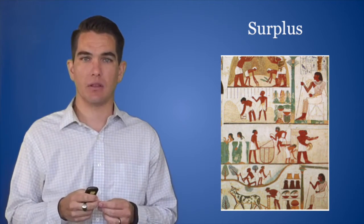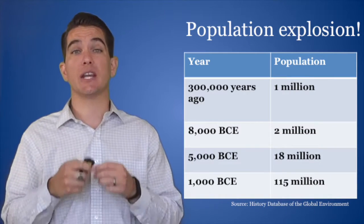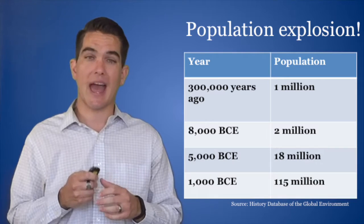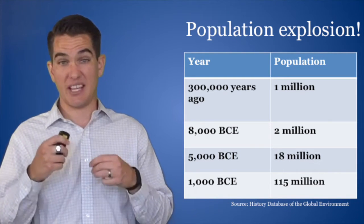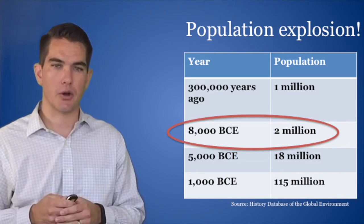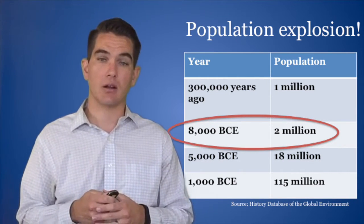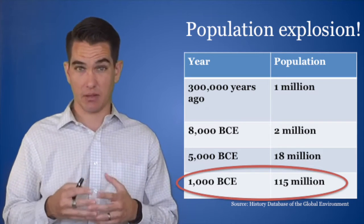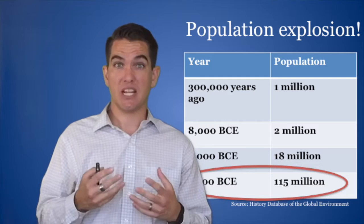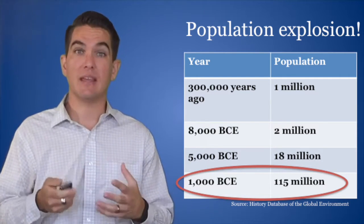As a result of the Neolithic Revolution, we see a population explosion. On this chart, you can see that right around the Agricultural Revolution, on the eve of agriculture taking over the world, there was only about 2 million people on Earth. Just a few thousand years later, there were 115 million. All that surplus of food meant that human beings were going to be able to have more children and feed more mouths. And that has all sorts of implications too.